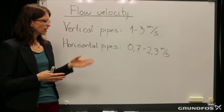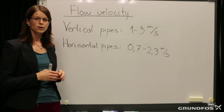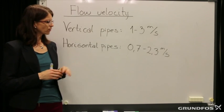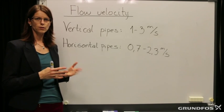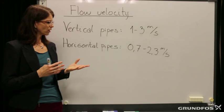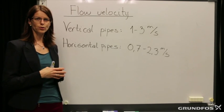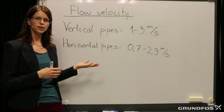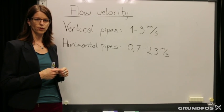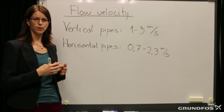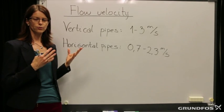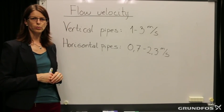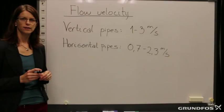We also want to avoid the velocity being too high, so the upper limitation is about 2.3 meters per second. The reason is that the wear of the pipes will increase when the velocity increases — there will be more noise, and also a very important economical factor: when the flow velocity increases, you also have increased friction, and thereby you need a bigger pump to pump the flow. From an economical point of view, flow velocity should be kept below 2.3 meters per second.